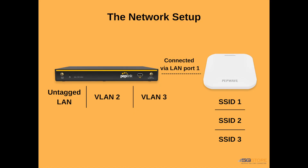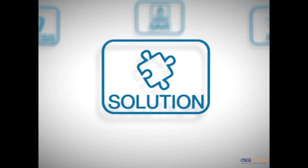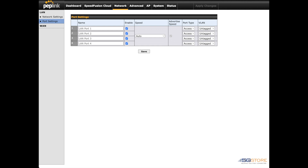The issue: we recently assisted someone using VLANs on their Peplink Balance router that was also connected to a Wi-Fi access point. The access point was connected to the default, or what Peplink calls the untagged LAN, but anything that tried to connect to the access point through any of the VLANs was getting a self-assigned IP address. This means the network was not properly handing out IP addresses to allow devices to connect.